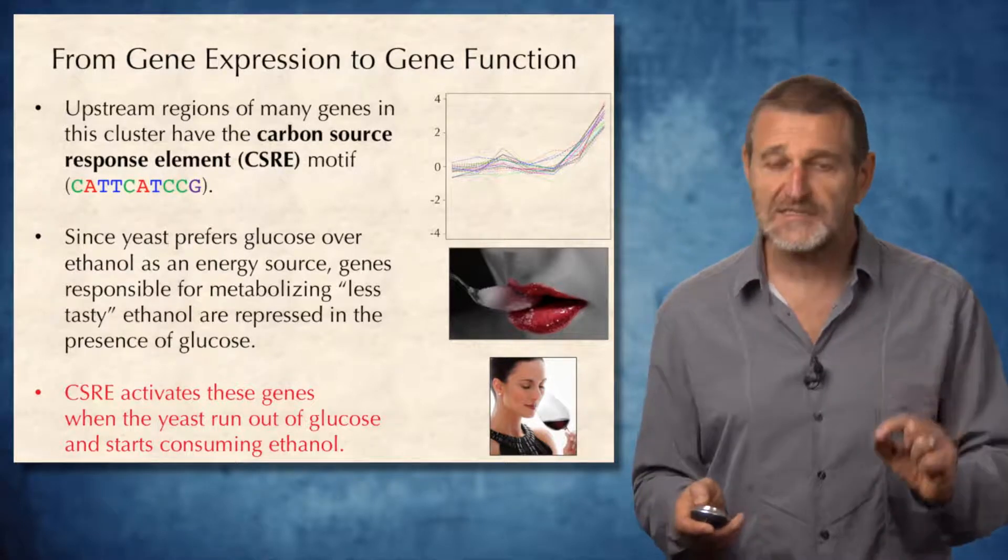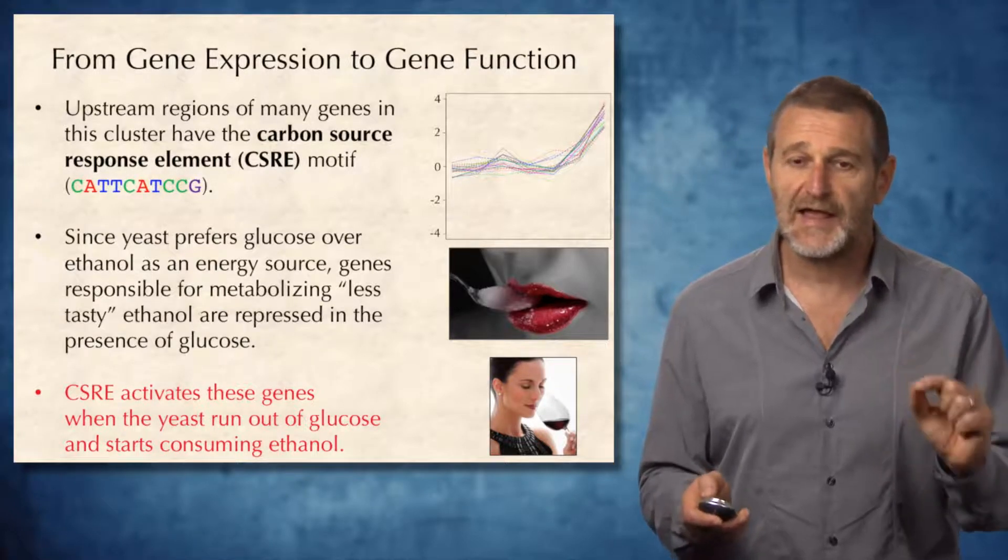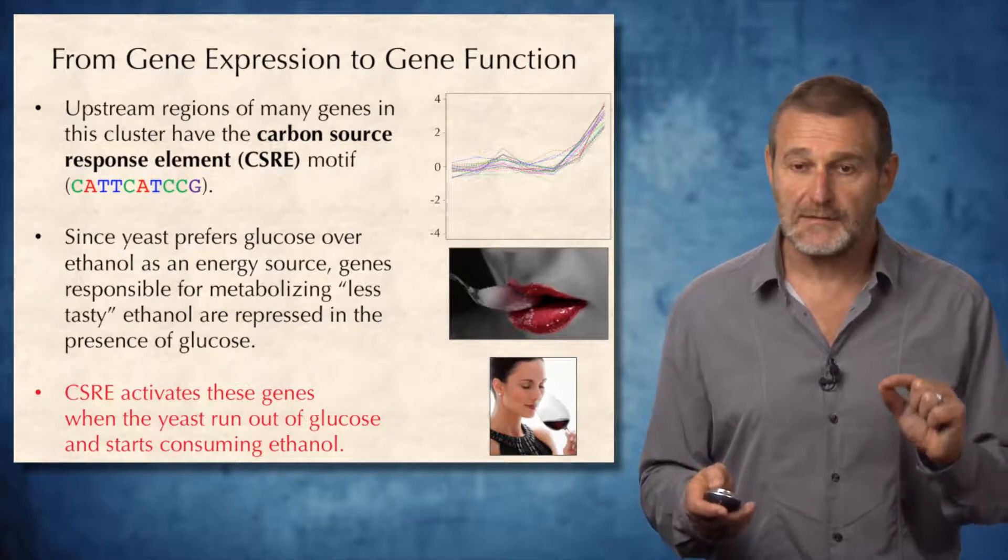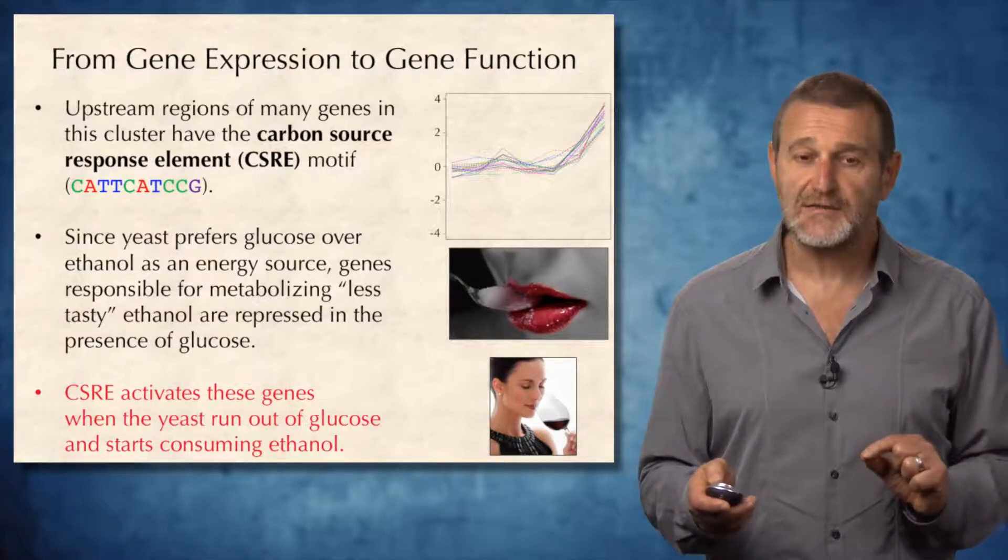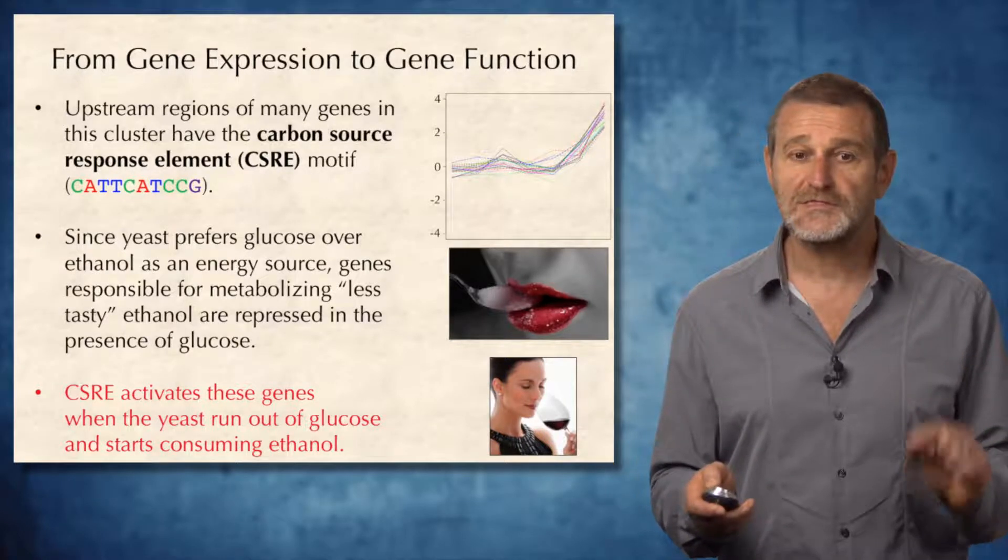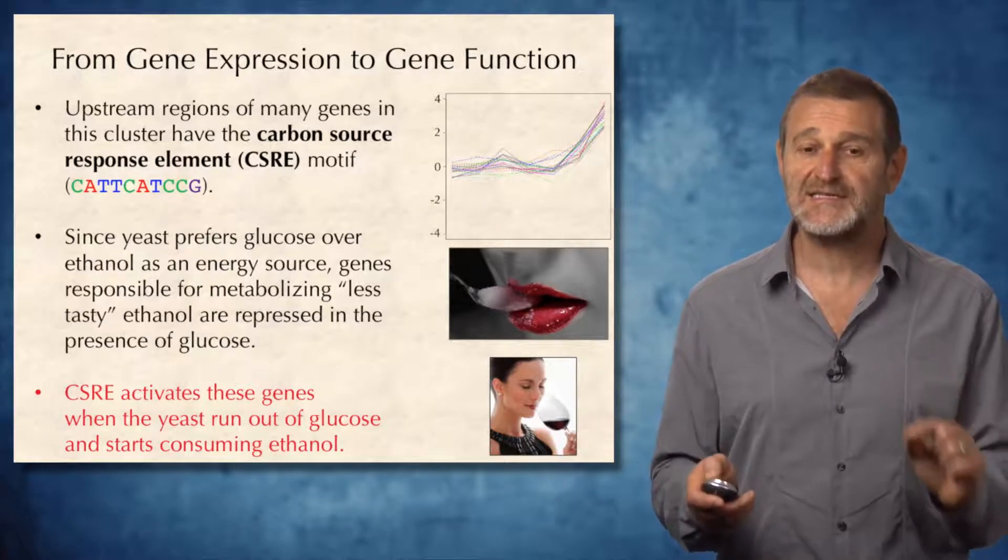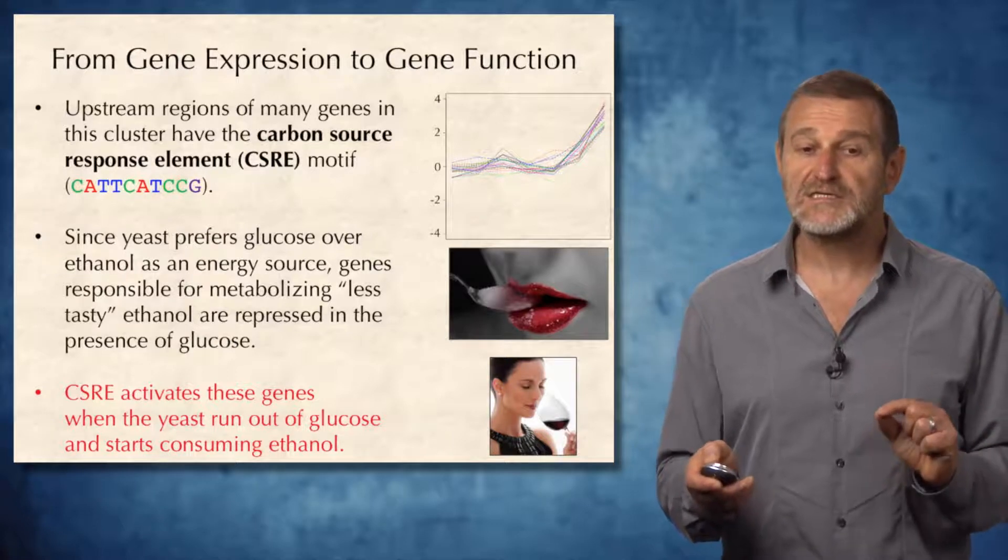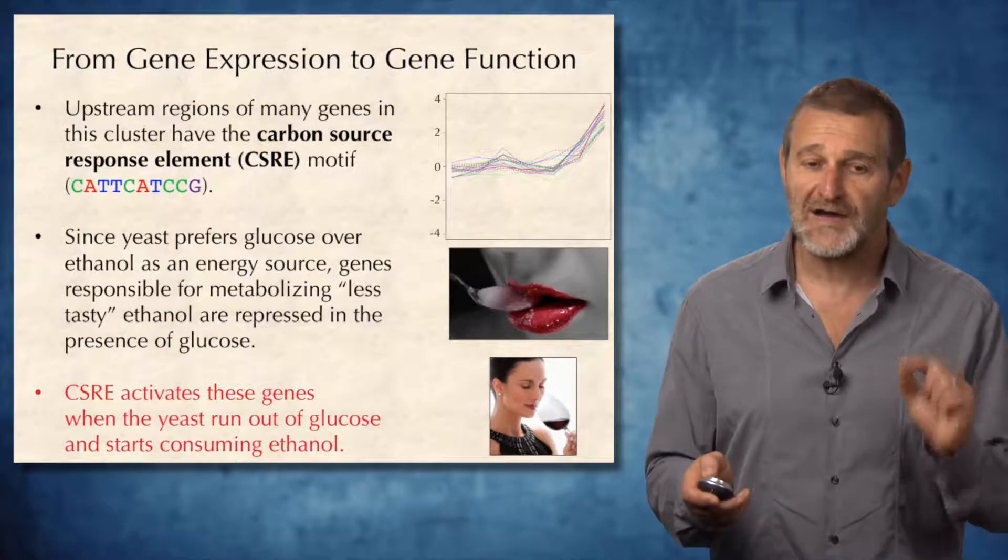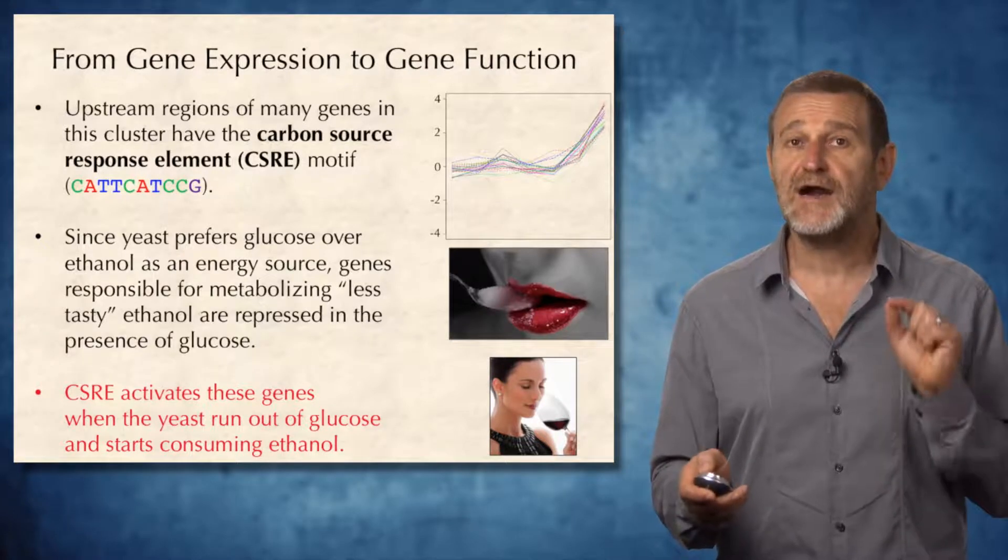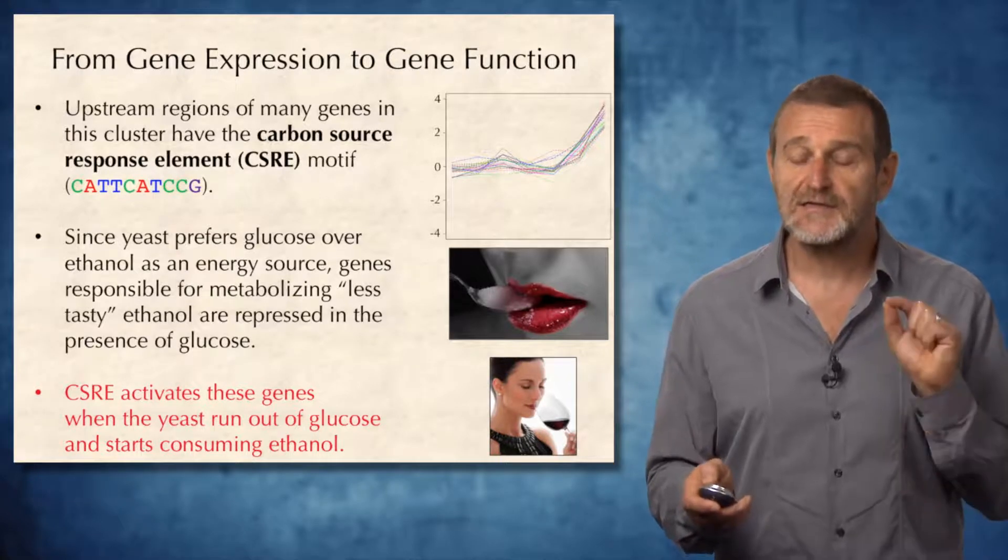And by noticing this, they started to decode the biological puzzle of yeast being able to switch from glucose to ethanol metabolizing pathway. Indeed, since yeast prefer glucose over ethanol as an energy source, genes responsible for metabolizing less tasty ethanol are repressed in the presence of glucose. This carbon source response element helped biologists to decode the puzzle of CSRE. Indeed, it turned out that CSRE activates the genes when the yeast runs out of glucose and start consuming ethanol.